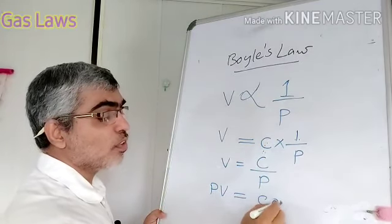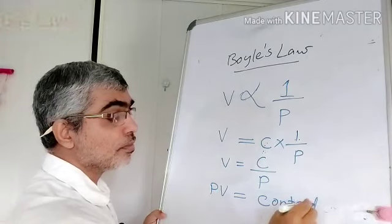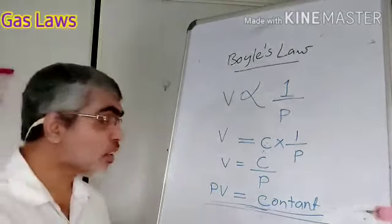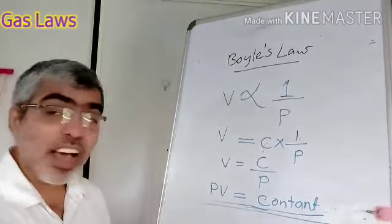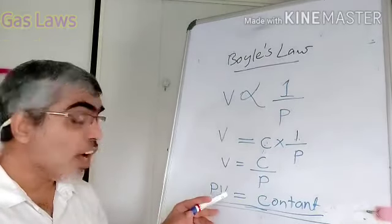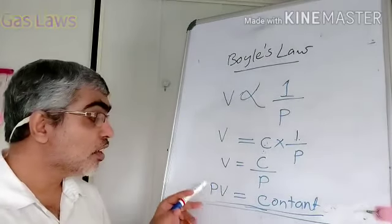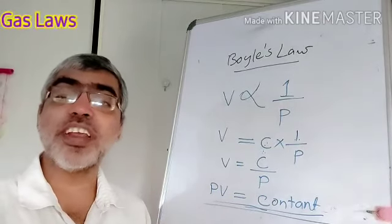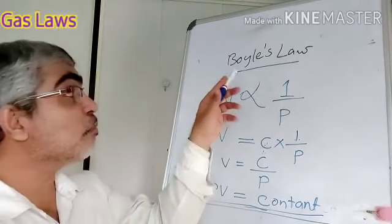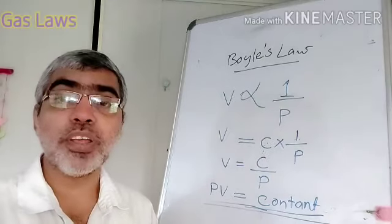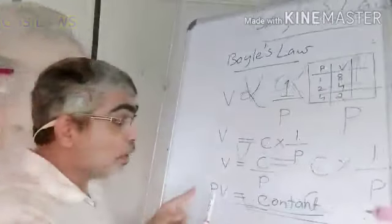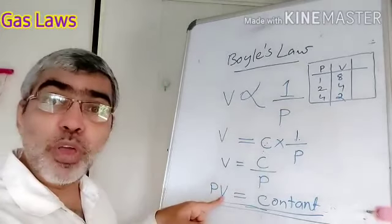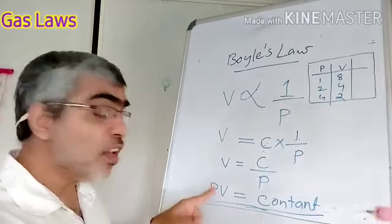What is the constant? The constant is temperature. Temperature is constant. If we have constant pressure, the volume and the temperature is constant.